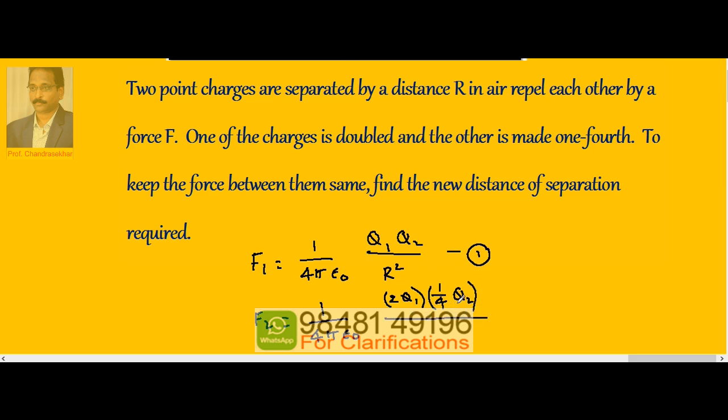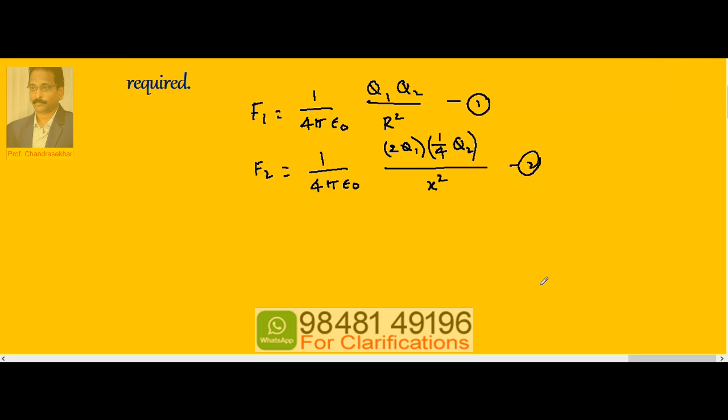And what must be the distance of separation? Let us say x, so that the force remains the same. We want to keep the force same, that means F1 is equal to F2. So equate 1 by 4πε₀ times q1 q2 by R squared is equal to again 1 by 4πε₀ times 2q1 times q2 by 4 divided by x squared.